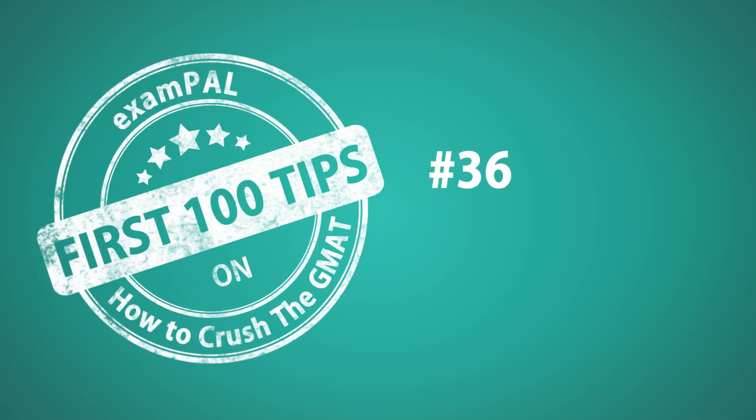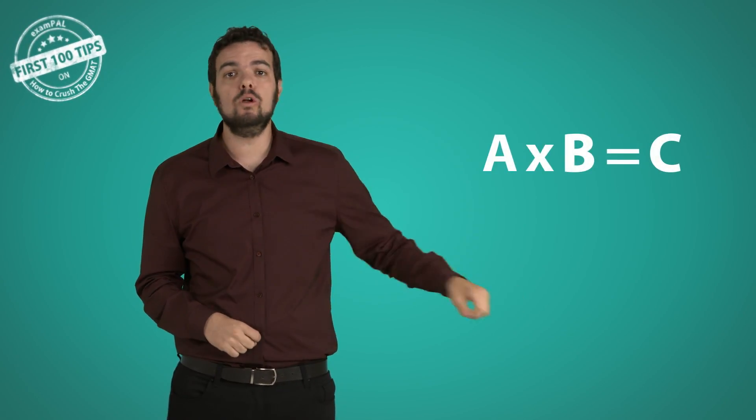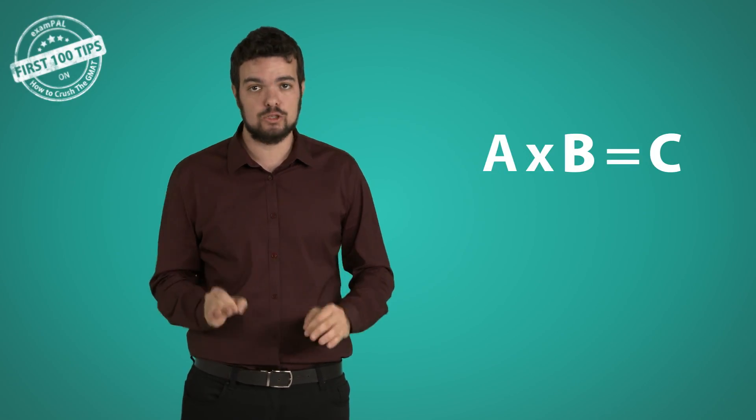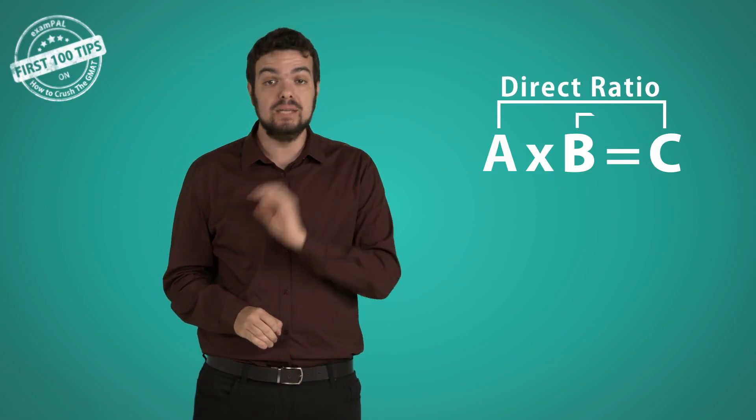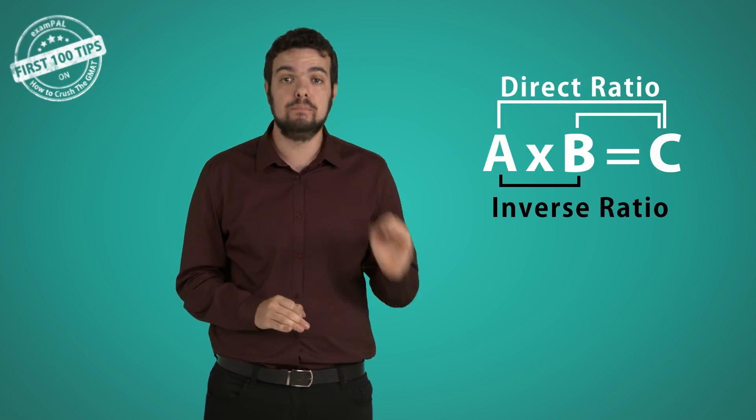Number 36. Most formulas we use in the GMAT are of the form A times B equals C. Such as speed times time equals distance, or percentage times the whole equals the part. What they all have in common is that they share the same logic. Direct ratio between A and C, and B and C, and an inverse ratio between A and B.